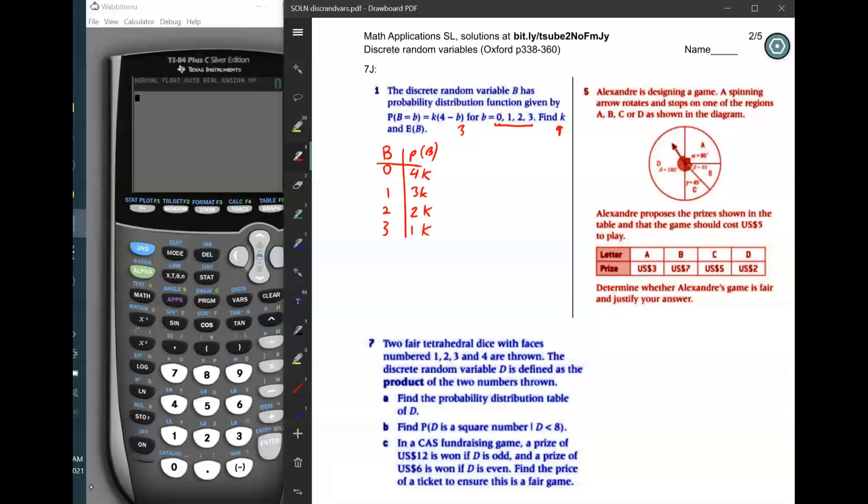So we know that the probability that zero would happen would be four k, probability that one would happen would be three k, and so on. Now, how do we figure out what the value of k is? Well, don't forget that really simple rule from the investigation that all the probabilities of the sample space have to add up to 100% or one. So these add up to one, which means that four k plus three k plus two k plus one k equals one.